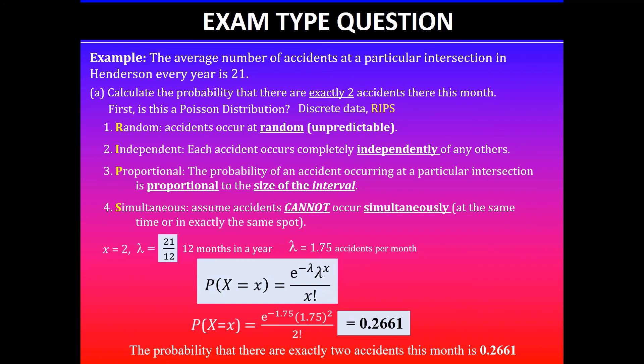So this means that the probability there are exactly two accidents this month is 0.2661. Hope this makes sense. I would suggest you can pause the video and take notes as you go.